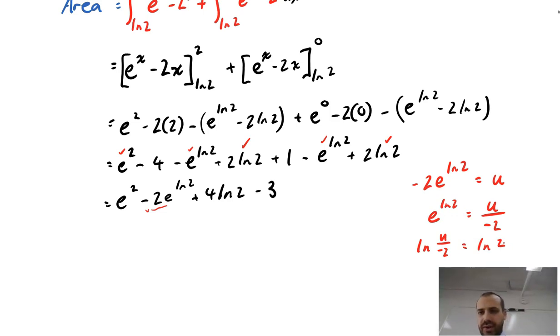So if lnu minus 2 equals ln2, then u over negative 2 equals 2. u over negative 2 equals 2, that means that u equals negative 4, and given that u is originally that, that means that that is actually negative 4.